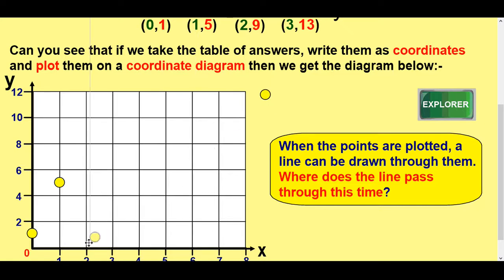2 along and 9 up. 2 along and 9 would be in between there. And finally, 3 along and 13 up. So, 3 along, that's just off the grid there. So, that would be something like that.